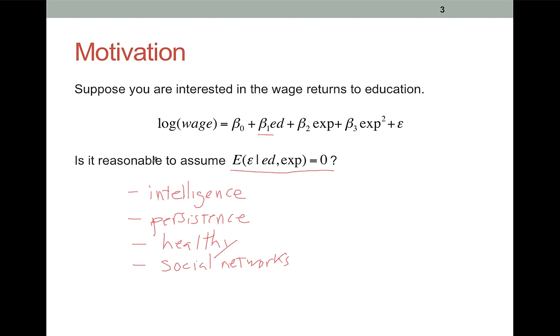Now, if we had measures of all these things, all these potential confounders, and we could control for them, that would address the problem. Unfortunately, most of these variables aren't in the big public data sets that economists like to use, and they're pretty hard to measure even if we wanted to collect our own data. IV is a method that accounts for this endogeneity without having to actually measure these variables.